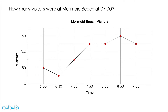How many visitors were at Mermaid Beach at 7 o'clock? The number of visitors at 7 o'clock is halfway in between 50 and 100 visitors, which is 75. So there were 75 visitors at 7 o'clock.